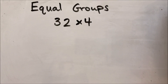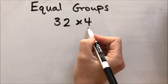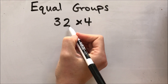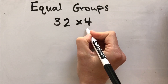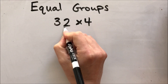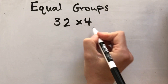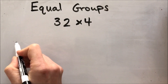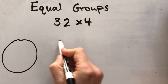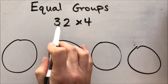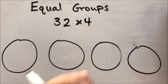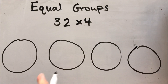This strategy I'm going to call equal groups. Instead of drawing four groups of 32 individual tallies, I'm again going to find my small factor. This time I'm comparing 32 and four. Four is the smaller factor, so that's going to tell me that I need to draw four groups.